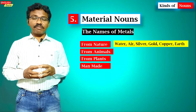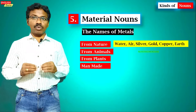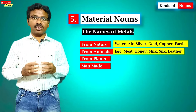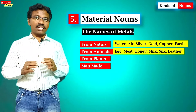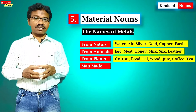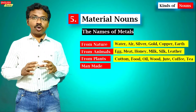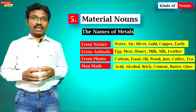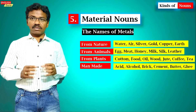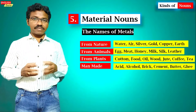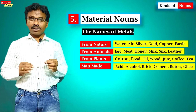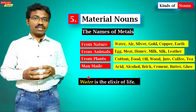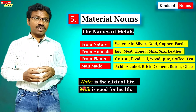The fifth kind is material nouns — the names of metals and materials formed from nature, like water, silver, gold, and copper. Materials from animals include egg, meat, honey, milk, silk, and leather. Materials from plants include cotton, food, oil, wood, juice, coffee, and tea. There are also man-made materials like acid, alcohol, brick, cement, butter, and ghee. Anything in the form of a raw material is called a material noun.